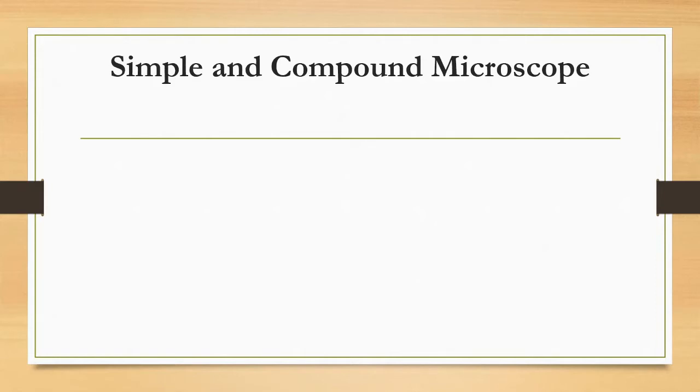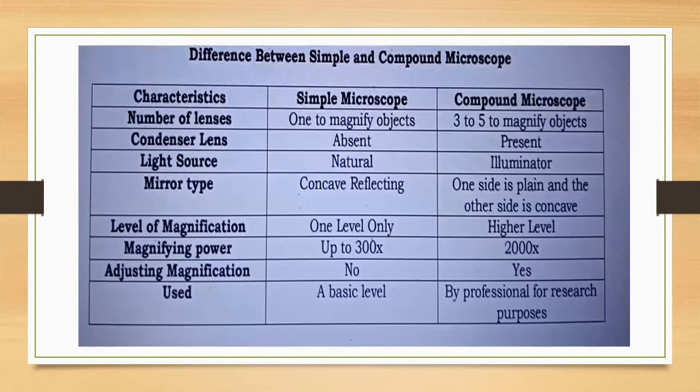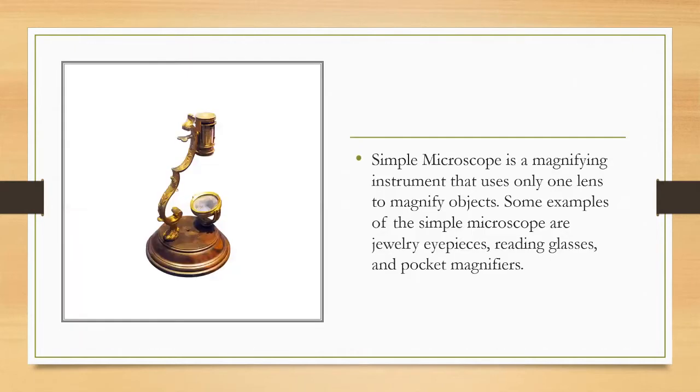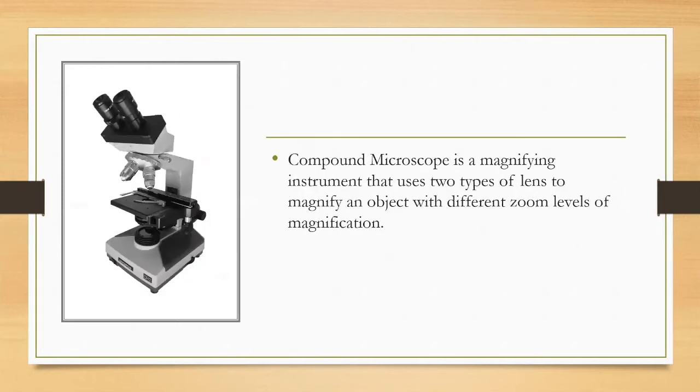Simple and compound microscope. Simple microscope is a magnifying instrument that uses only one lens to magnify objects. Some examples are jewelry eyepieces, reading glasses, and pocket magnifiers. Compound microscope is a magnifying instrument that uses two types of lenses to magnify an object with different zoom levels of magnification.